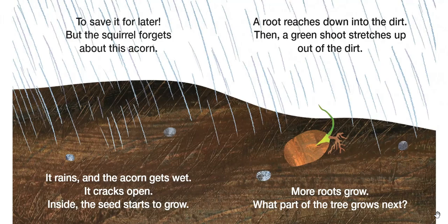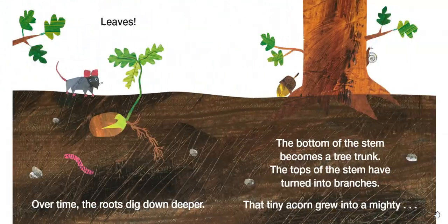Then a green shoot stretches up out of the dirt. More roots grow. What part of the tree grows next? Leaves.